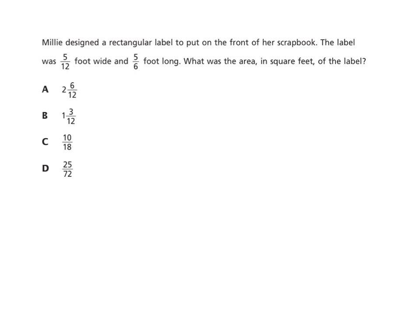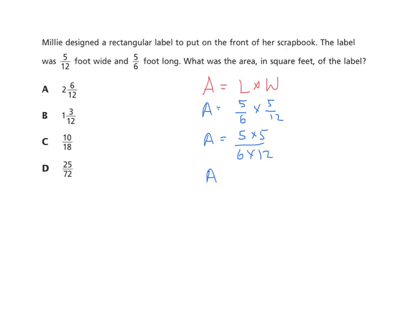Millie designed a rectangular label for her scrapbook. The label is five-tenths foot wide and five-sixths foot long. What is the area in square feet? Whenever I see area, I write area equals length times width. The length is five-sixths and the width is five-twelfths. Multiplying: five times five over six times twelve — no common factors — gives twenty-five over seventy-two. The answer is twenty-five seventy-seconds, choice D.